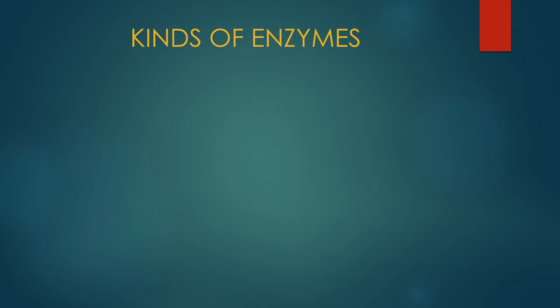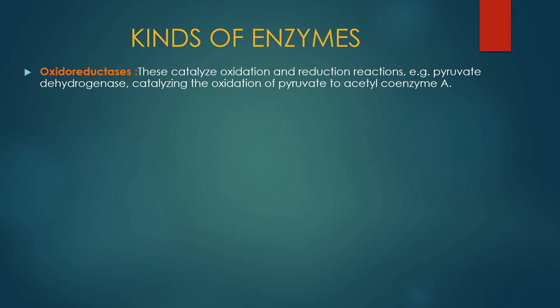Second type transferases کی ہے. Transferases functional group یا chemical group کو ایک compound سے دوسرے compound تک transfer کرتے ہیں. ان کی example transaminases ہیں جو کہ amino group کو ایک molecule سے دوسرے molecule تک transfer کریں گے transamination reactions کے اندر.